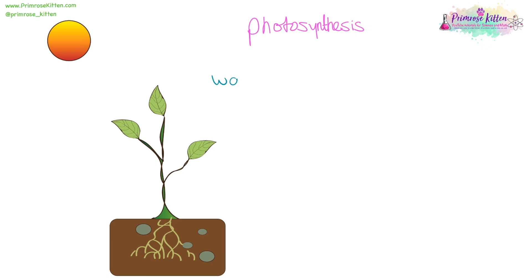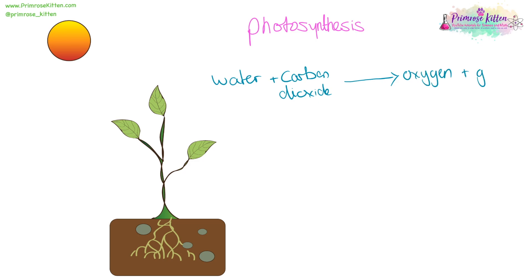Photosynthesis is going to take water, carbon dioxide, and turn it into oxygen and glucose. We can take light and put it above the equation, but do not put it in the equation because it is not a reactant. It's just a condition that's needed.